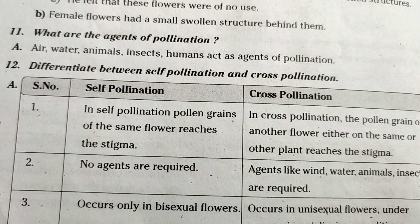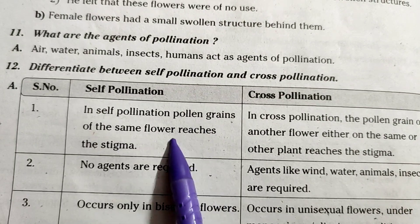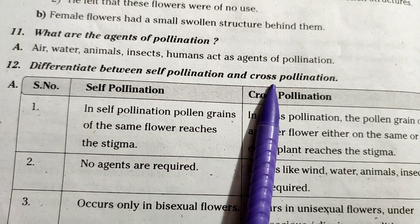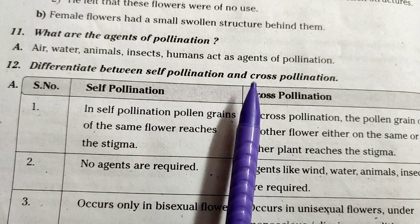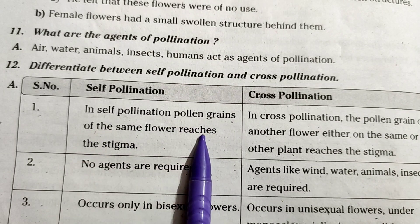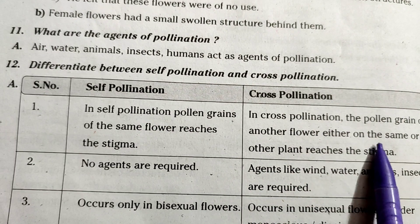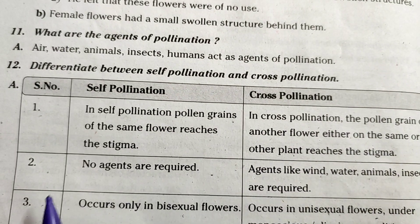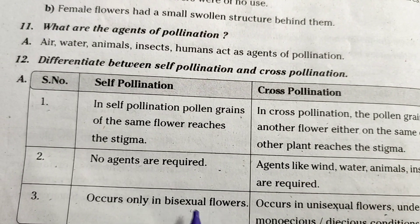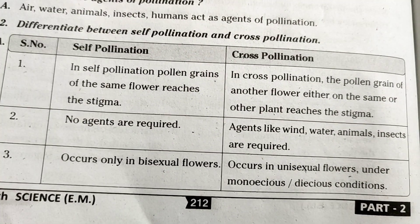What are the agents of pollination? Air, water, animals, insects, and humans act as agents of pollination. Differentiate between self-pollination and cross-pollination. Self-pollination: pollen grains of the same flower reach the stigma; no agents are required; occurs only in bisexual flowers. Cross-pollination: pollen grains of another flower — either on the same or a different plant — reach the stigma; agents like wind, water, animals, and insects are required; occurs in unisexual flowers under monoecious or dioecious conditions.